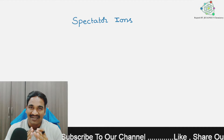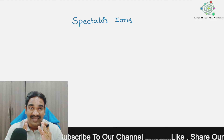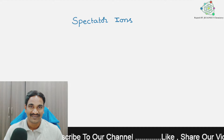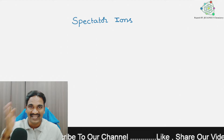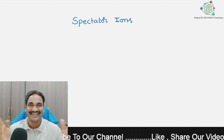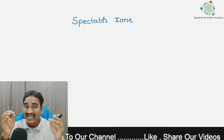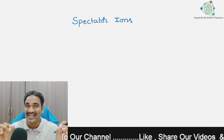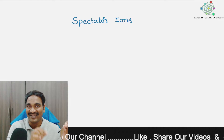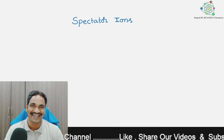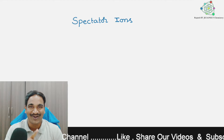What is meant by a spectator ion? A spectator ion is an ion which is not participating in the reaction, and it is present on both the reactant side and the product side. Such ions are called spectator ions — they watch the reaction; they do not participate in it.